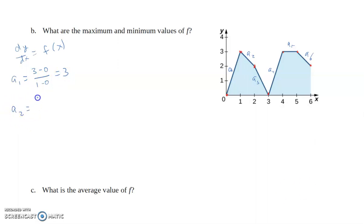A3 is 0 minus 2 over 3 minus 2, which is negative 2. A4 is 3 minus 0 over 4 minus 3, or 3 fourths.